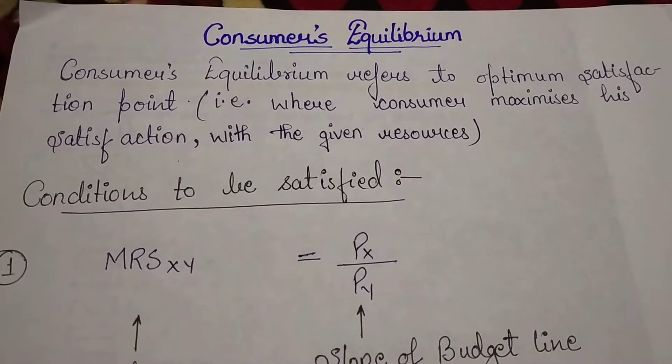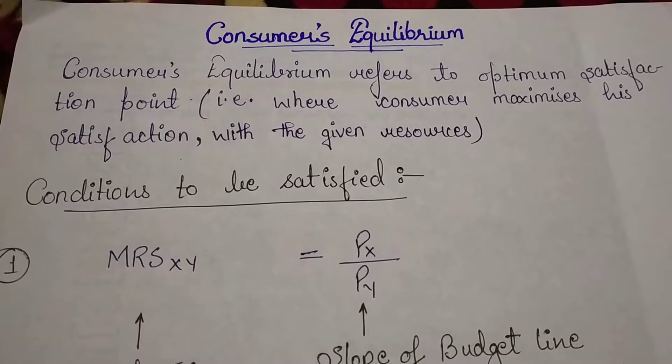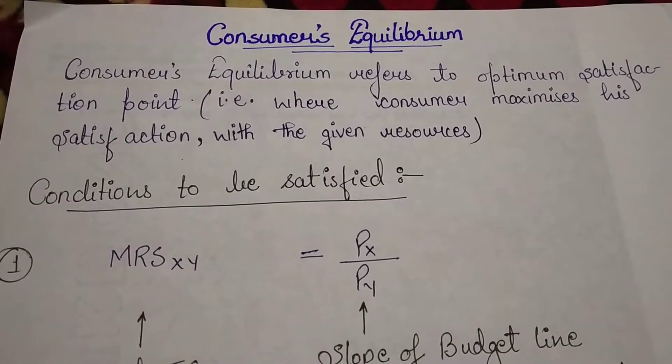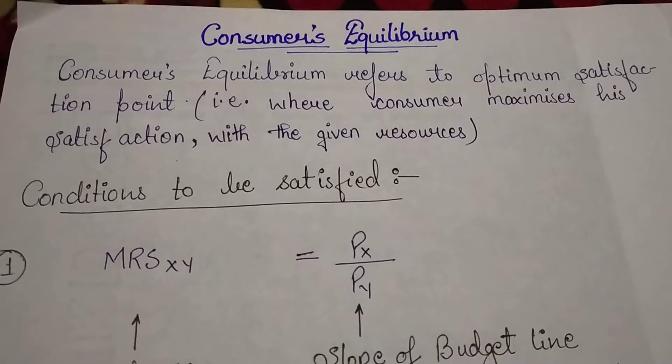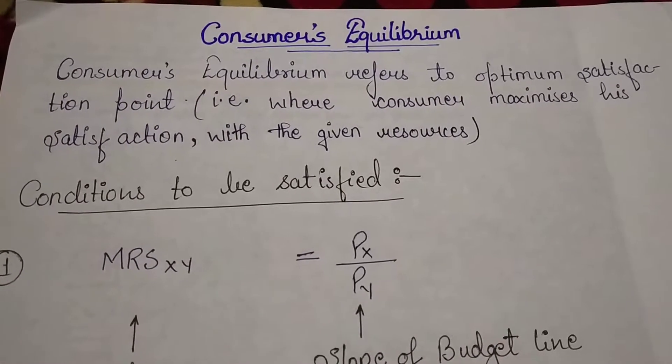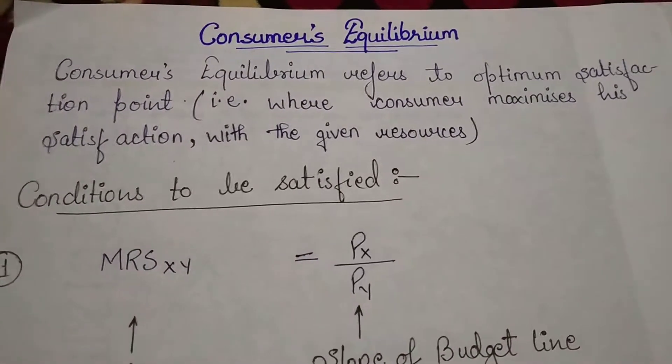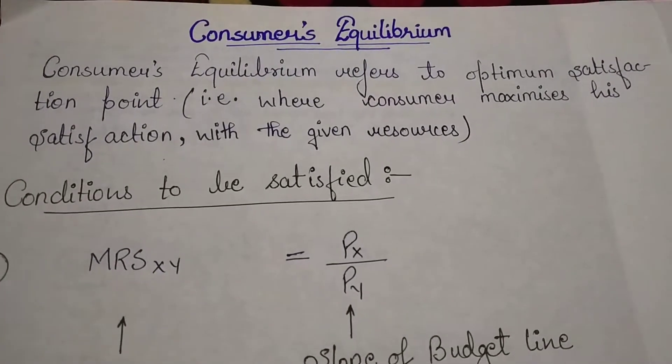When you purchase any commodity and consume that commodity, the amount of satisfaction derived from the amount of money should be equal to the amount of money. Satisfaction derived should be equal to the worth of money.